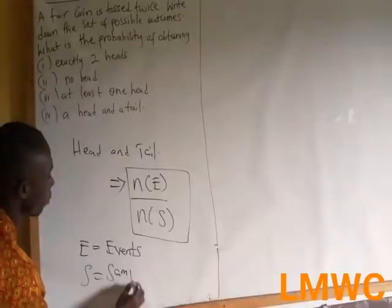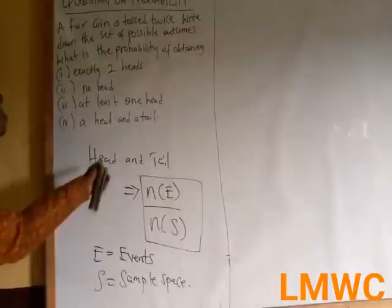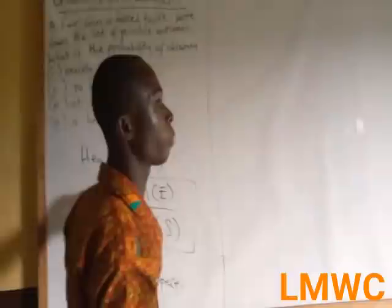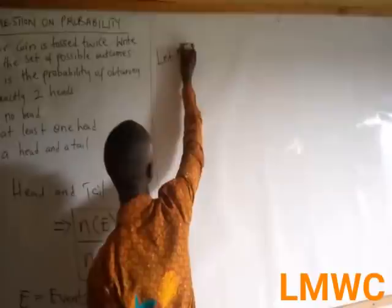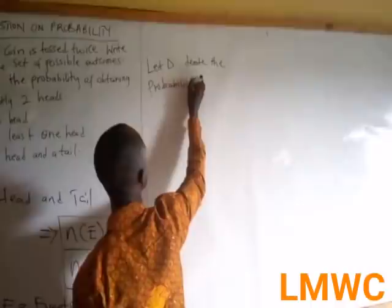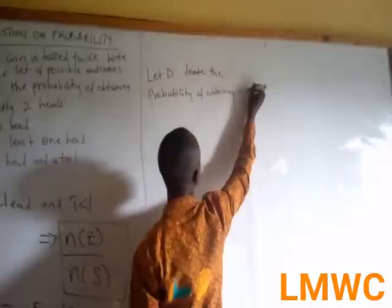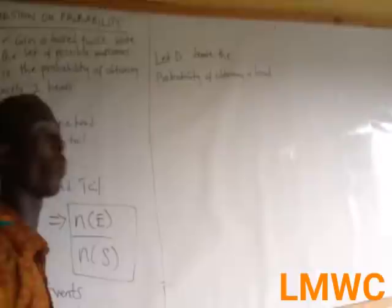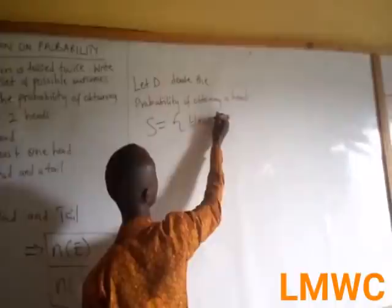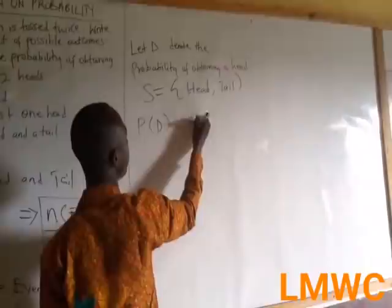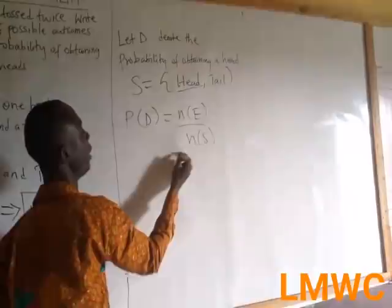So if they say a coin is tossed once and they say find the probability of obtaining a Head, you choose a variable to denote that probability. Let D denote the probability of obtaining a Head. It becomes number of events over number of sample space. The Head is only one, over the number of sample space which is two.